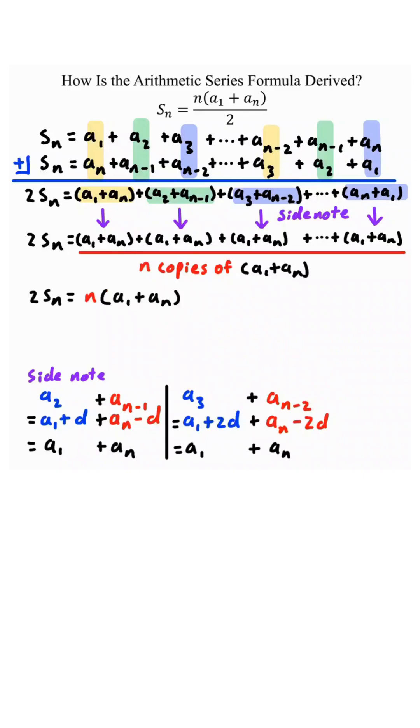But we only want one copy of s of n, so we divide both sides by 2 and we get s of n equals n times a sub 1 plus a sub n all over 2. And that is how the arithmetic series formula is derived.